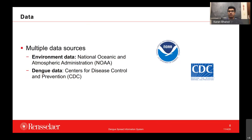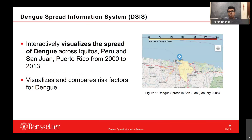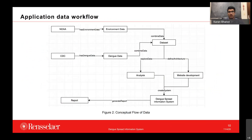Once our data was cleaned and formulated into a single repository and data file, we created the Dengue Spread Information System, which visualizes the spread of Dengue across two cities: Iquitos, Peru, and San Juan, Puerto Rico, from the year 2000 to 2013. We also included some data from 1990 to 2000 as much as we could. We decided to visualize and compare the various risk factors for the two cities as a stepping stone for researchers. As you can see in figure one, it shows how the Dengue spread looks for January 2008, with the highlighted area showing a certain number of Dengue cases.